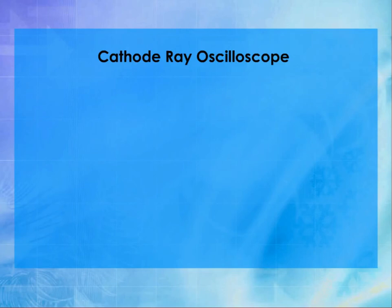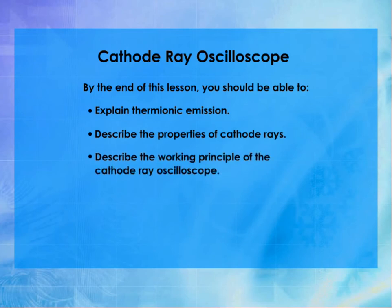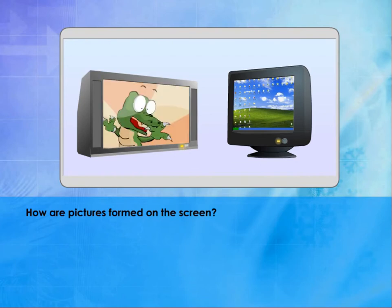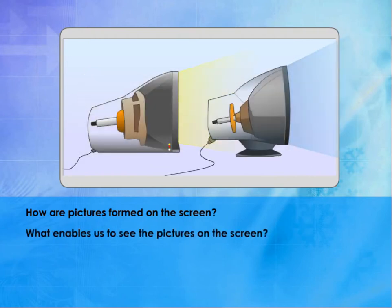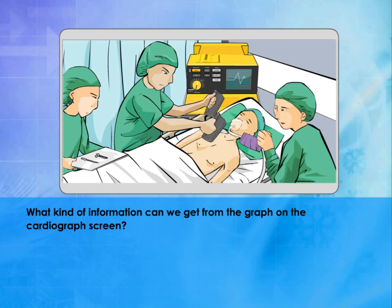Cathode Ray Oscilloscope. By the end of this lesson, you should be able to: explain thermionic emission, describe the properties of cathode rays, and describe the working principle of a cathode ray oscilloscope. How are pictures formed on the screen? What enables us to see the pictures on the screen? What kind of information can we get from the graph on the cardiograph screen?